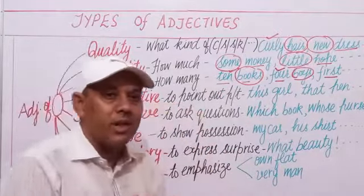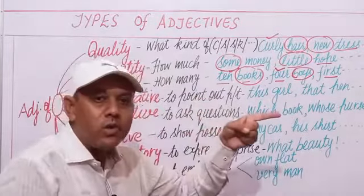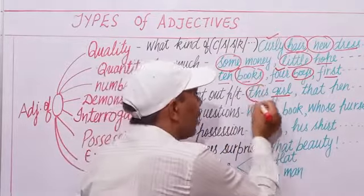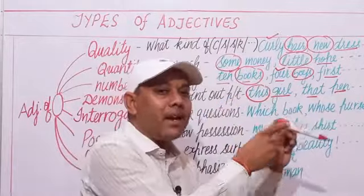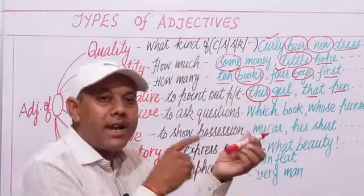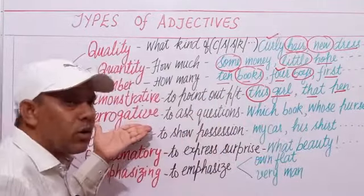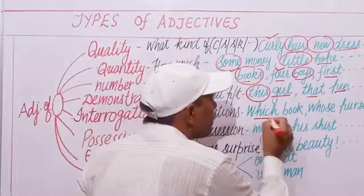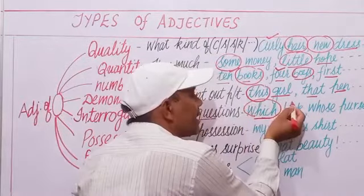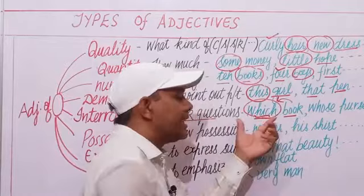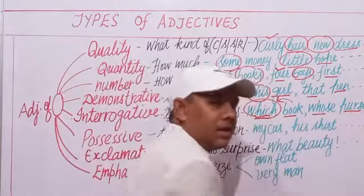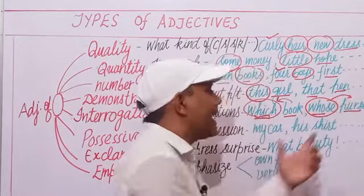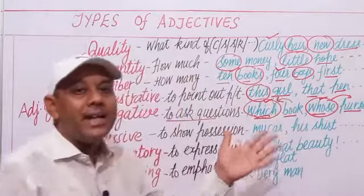Demonstrative adjectives are used to point out a person, place, thing, or animal. For example, 'this girl' — 'which girl? This girl.' 'That pen' — 'which pen? That pen.' Demonstrative adjectives point out a particular noun. Interrogative adjectives help to ask questions. For example, 'which book?' — when a WH word is followed by a noun, it is known as an interrogative adjective. 'Whose purse?' — 'whose' followed by the noun 'purse' is an interrogative adjective.